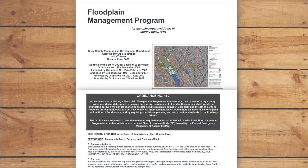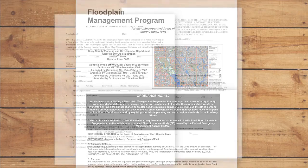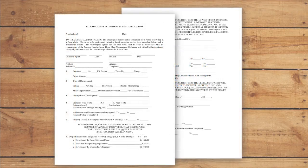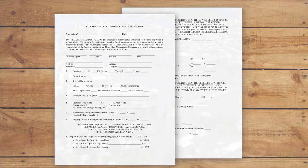For regulatory purposes, a community's floodplain management ordinance and the State of Iowa require development permits for most types of development located in the Special Flood Hazard Area. Regulatory requirements will be discussed in greater detail in later videos.